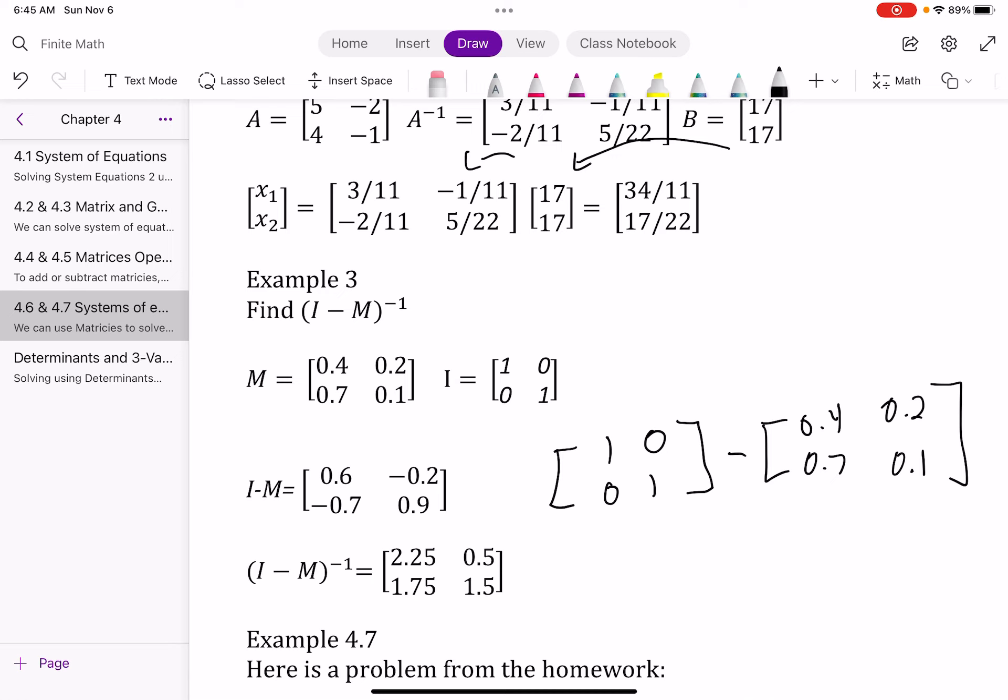So now I can subtract these, right? So 1 minus 0.4 is 0.6. 0 minus 0.2 is a negative 0.2. 0 minus 0.7 is negative 0.7. And 1 minus 0.1 is 0.9. And so there is how I got my I minus M matrix.